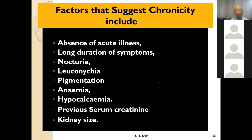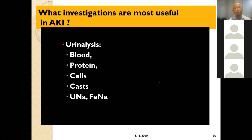Further factors suggesting chronicity include absence of acute illness, long duration of symptoms, leuconychia indicating hypoalbuminemia, anemia, and hypocalcemia. Previous raised serum creatinine also points to CKD. Anemia, hypertension, and raised creatinine are important clinical markers for CKD. Most importantly, kidney size on ultrasonography — in chronic kidney disease the kidneys are small, but not in acute disease.